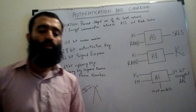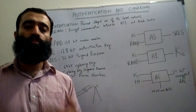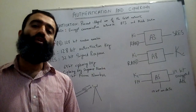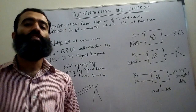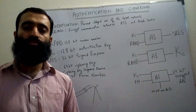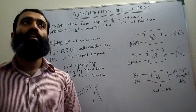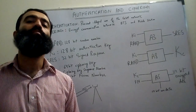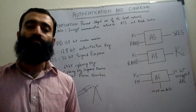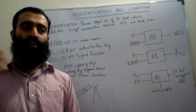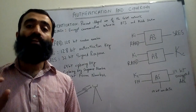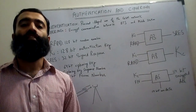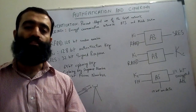First of all, I want you to understand that this lecture consists of two parts. In the first part we are going to talk about the important identifiers or parameters which are used in the authentication and ciphering procedure, as well as the algorithms that are used. Then in the second part we will see how they are implemented in the network, in what entities these algorithms are implemented, and what the signal flow is between those entities during execution.